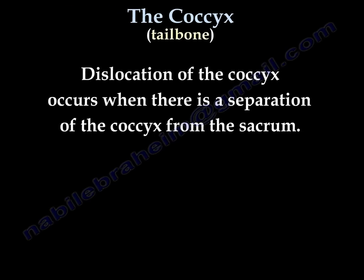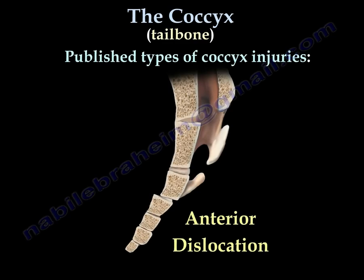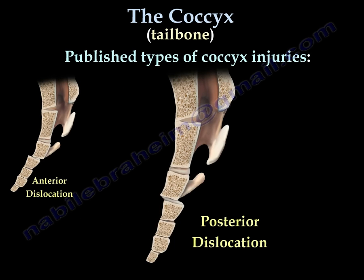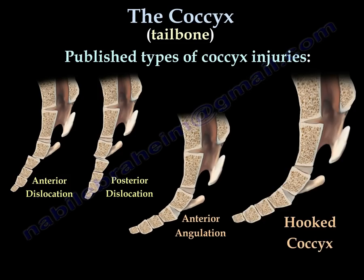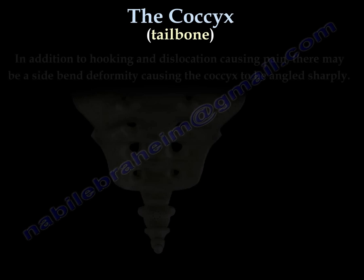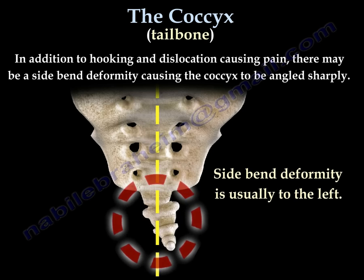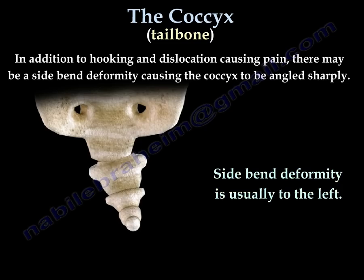Dislocation of the coccyx occurs when there is a separation of the coccyx from the sacrum. The published types of coccyx injuries include anterior dislocation, posterior dislocation, anterior angulation, and hooked coccyx — which many people think is a significant cause of tailbone pain. The side bend deformity of the coccyx is another type that causes coccyx pain.